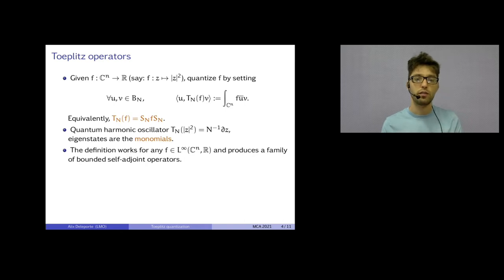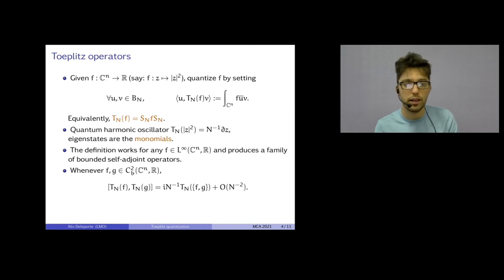Now, this definition of quantization works very well with any function which is bounded everywhere to produce bounded self-adjoint operators. And if f has polynomial growth, it produces a sequence of non-bounded self-adjoint operators but with a dense domain. And very importantly, whenever f and g are sufficiently regular functions, then you can compute by integration by parts using the formula for Sn that I gave you previously, you can compute the commutator between Tn of f and Tn of g. And at dominant order, so you gain a factor n, and at dominant order what you find is i times Tn of the Poisson bracket between f and g.